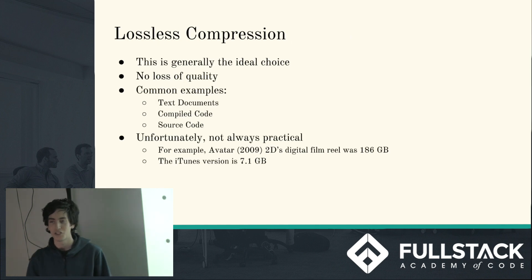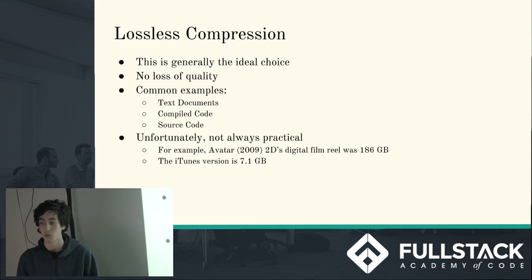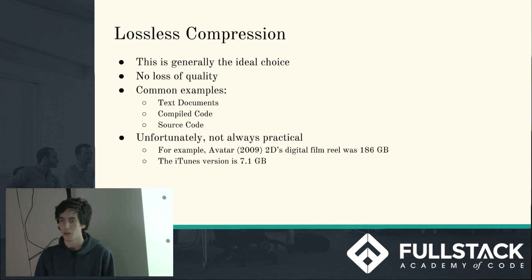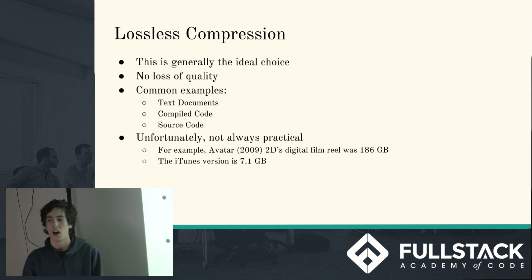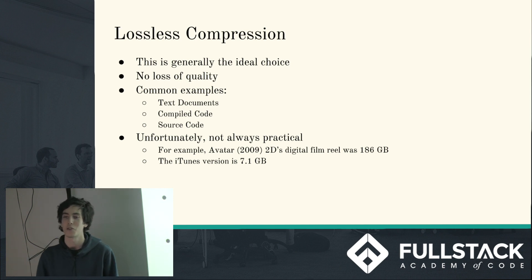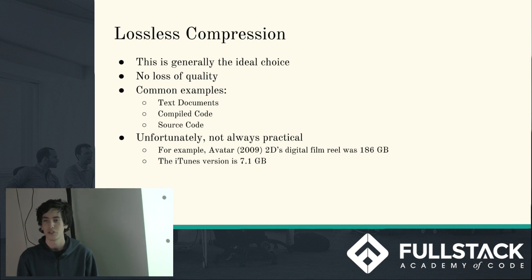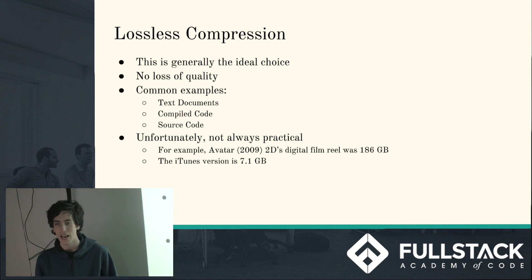Lossless compression is generally the ideal choice if you can actually pull it off — there's no loss of quality. The most common examples for us in the computer science world are text documents, source code, and compiled code. As I'm sure all of you have had the problem where you miscapitalized something or misspelled a string — can you imagine what would happen if you lost information in your text file? As much as one bit wrong could mean your entire program would die, so you need completely perfect re-rendering of text.